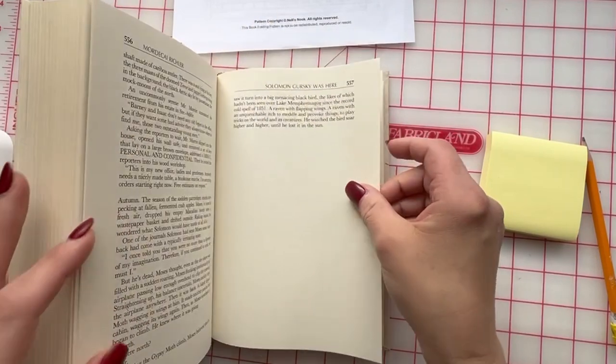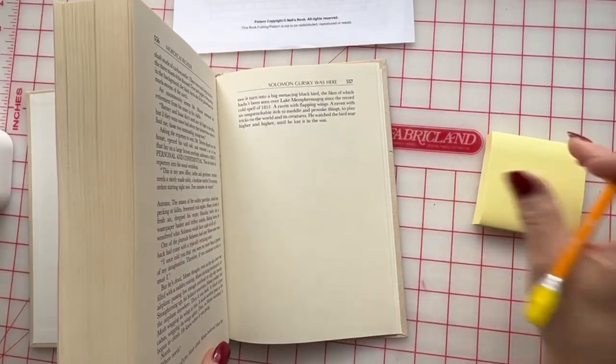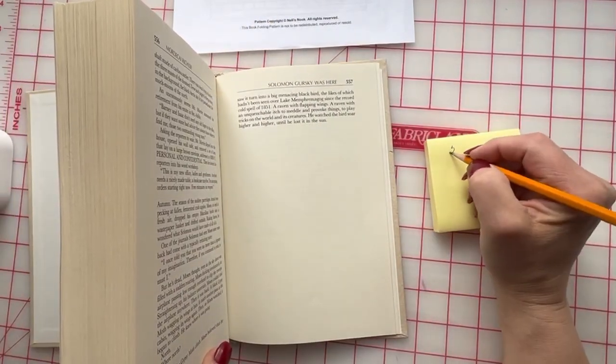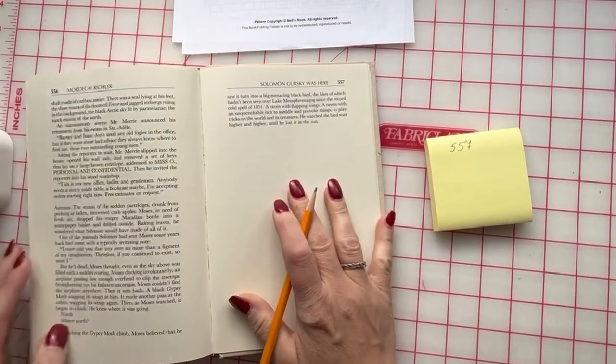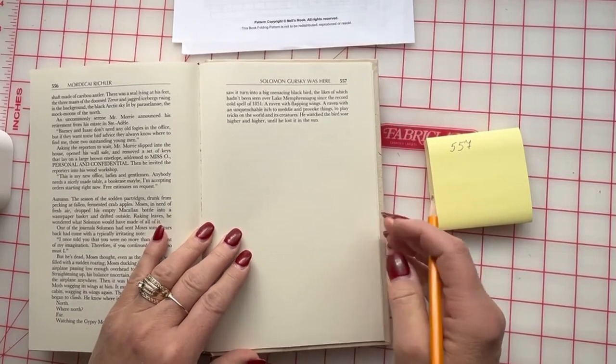This book is showing me that I have 557 numbered pages. We will calculate all the pages that are able to be folded.